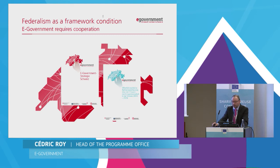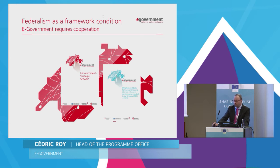With this budget, the parties finance the strategic plan for 4 million and the program office for 1 million per year. The strategic plan consists of 8 strategic projects, 4 services, and a few innovation projects.